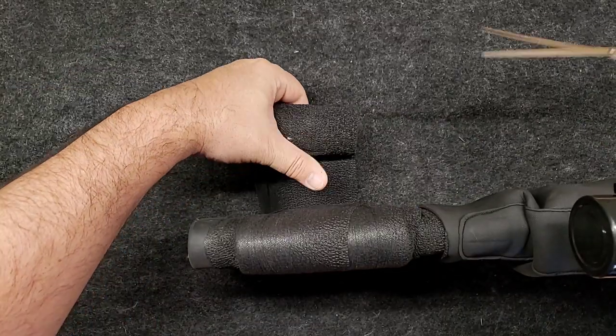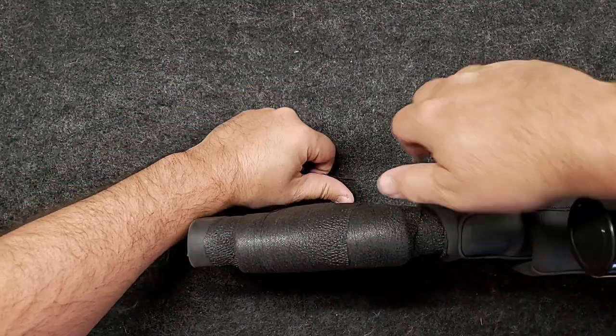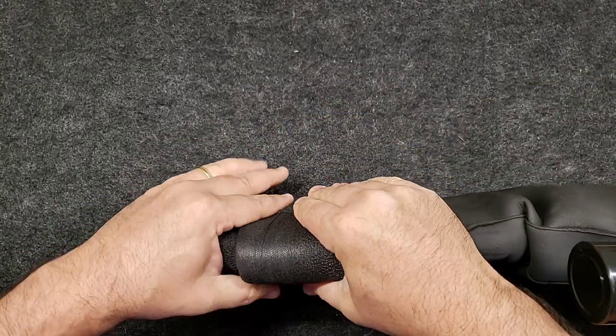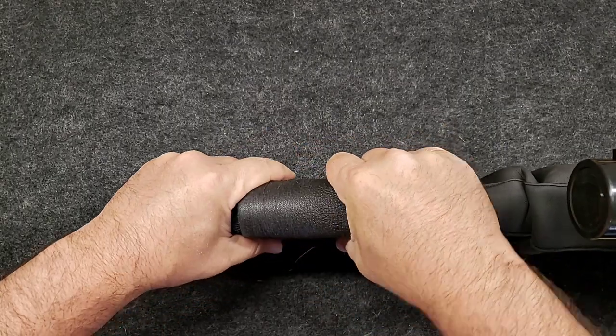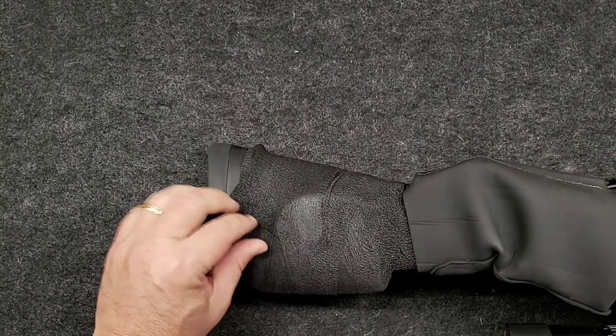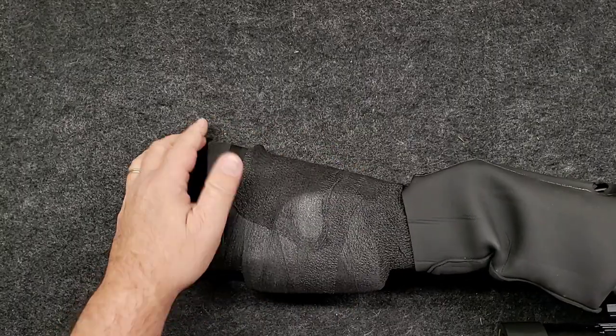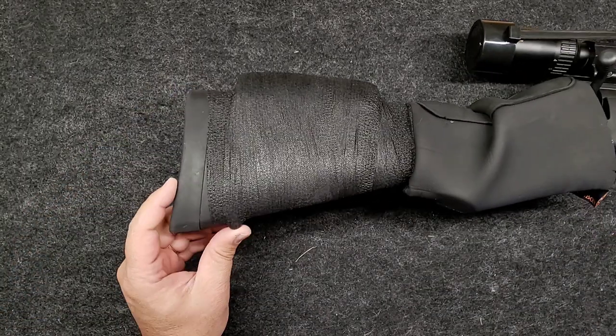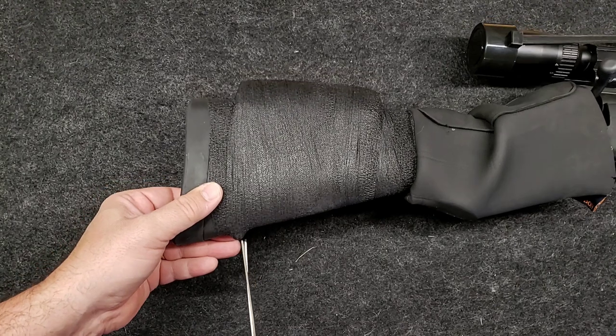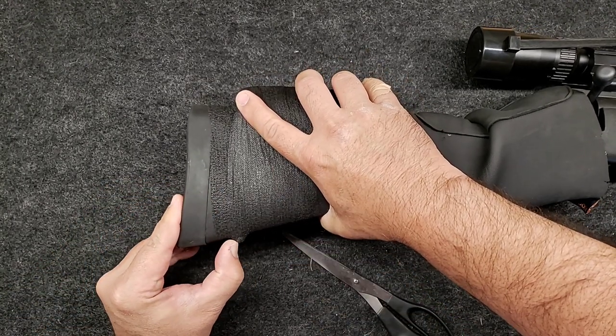All right, that should be good. We'll just cut it right here and pull this in tight and let it stick to itself. That's it, it's on. Now we're going to want to cut this little bottom piece right here to allow the sling stud to be exposed so we can add our sling back to the gun.